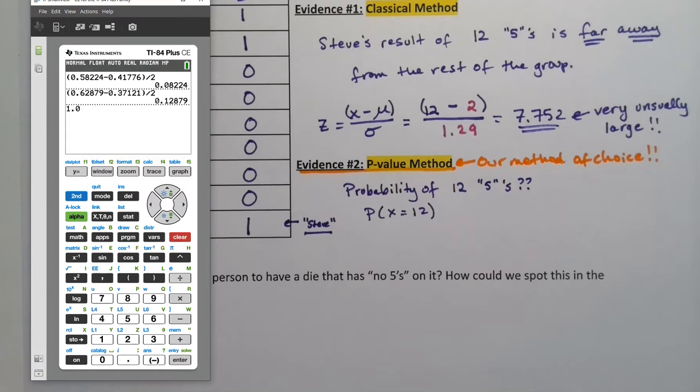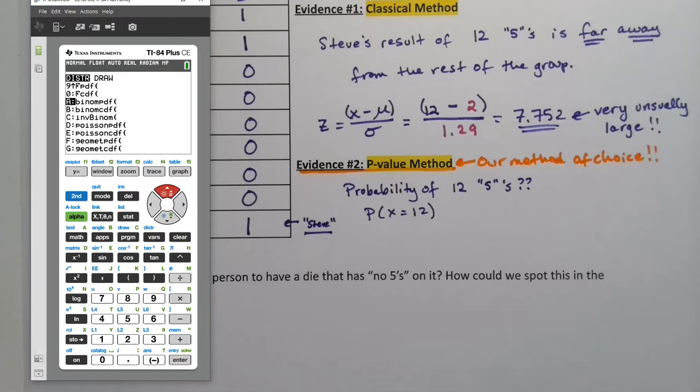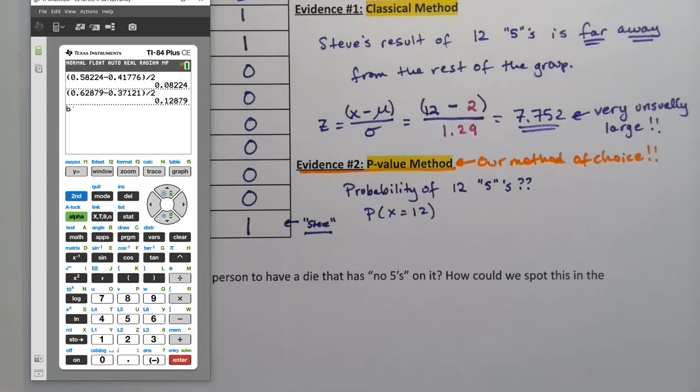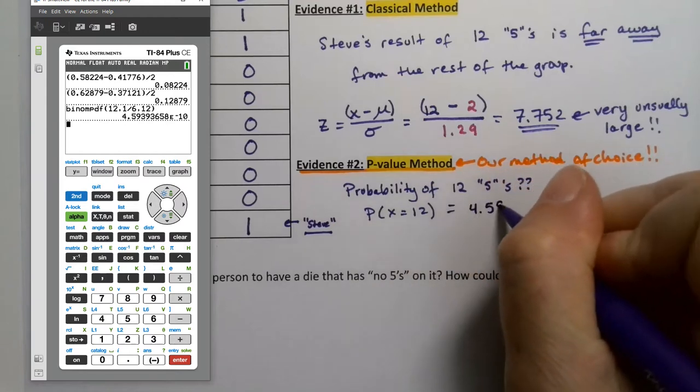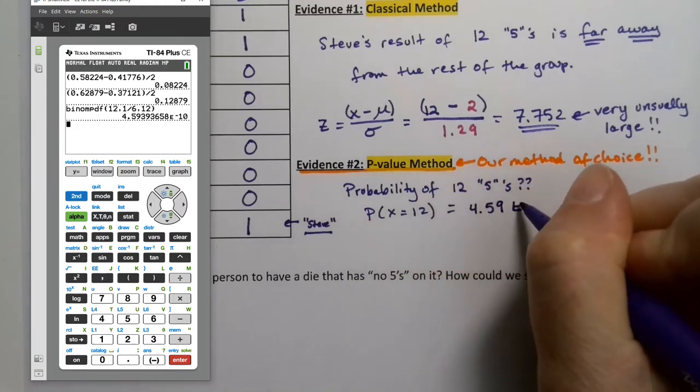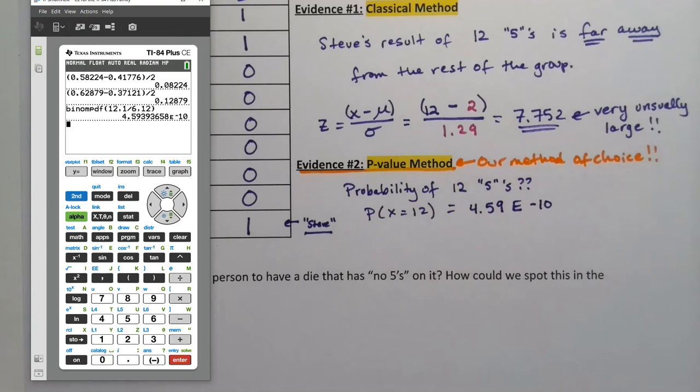So if we do it on the calculator it's second distribution binomial PDF. We had 12 trials, the probability of success was 1/6, right, 1 divided by 6, and Steve got 12 fives. So paste and that is the probability. It is 4.59 e-10. Notice that e back there because that's scientific notation.